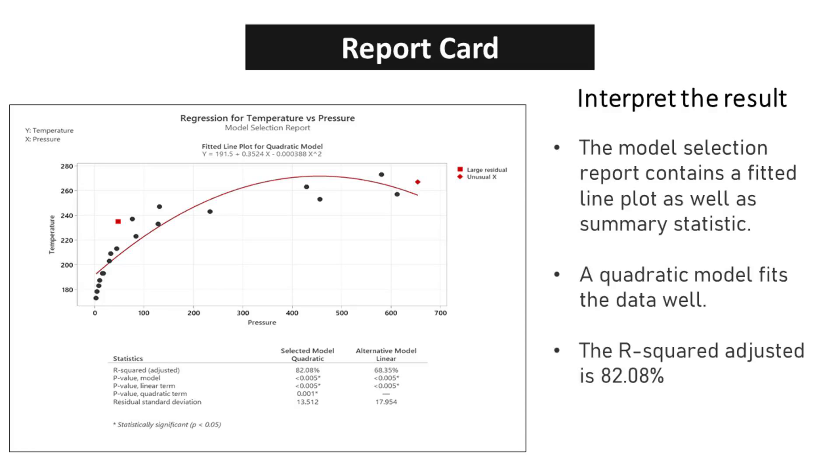The model selection report contains a fitted line plot as well as summary statistics. After careful analysis, it has become evident that a quadratic model fits the data exceptionally well. This finding is significant as it allows us to make more accurate predictions and informed decisions based on the data at hand.